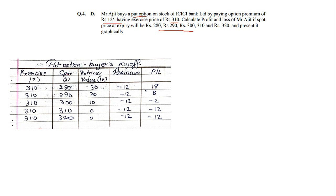We make the table. Spot prices are 280, 290, 300, 310, 320. Exercise is 310 in all cases. Now for intrinsic value — remember this is very important for a put option. The rule is: if the exercise price and spot price are equal or the spot is more, the value becomes 0. But if the exercise price is more than the spot price, you will have a positive return: positive 30, 20, and 10 for spots 280, 290, 300 respectively.